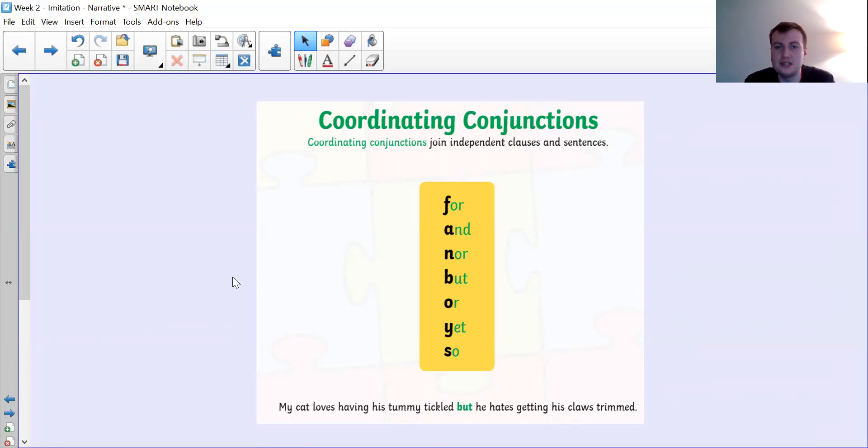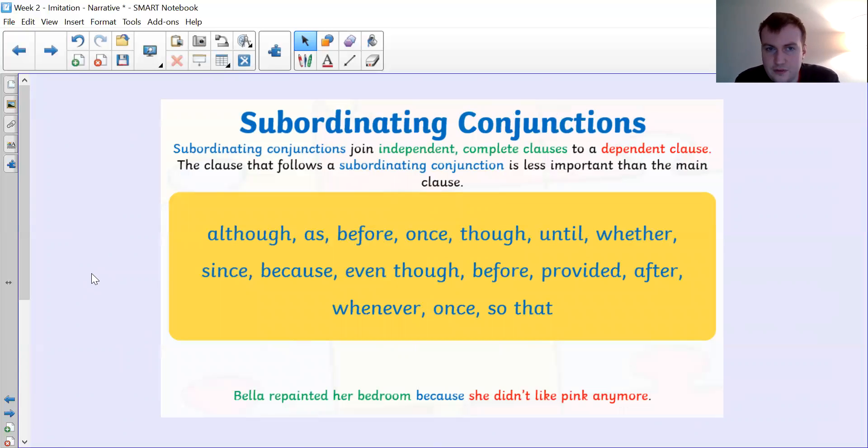Now subordinating is slightly different. The first bit can be a sentence on its own. The second bit after the conjunction is not a sentence on its own. It relies on that first bit to make sense. It's called a dependent clause. With coordinating everything's independent, they're their own sentences, they're strong independent sentences. But with subordinating the second one is dependent, it's not a sentence by itself. The example here is Bella repainted her bedroom. That is an independent clause.